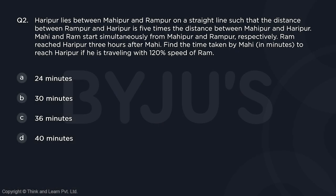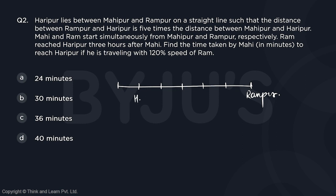Question number two: Haripur lies between Mahipur and Rampur on a straight line. The distance between Rampur and Haripur is five times the distance between Mahipur and Haripur. If we draw a line and divide it into six equal parts, we have Rampur at one end, Haripur at the next point, and Mahipur at the first point.